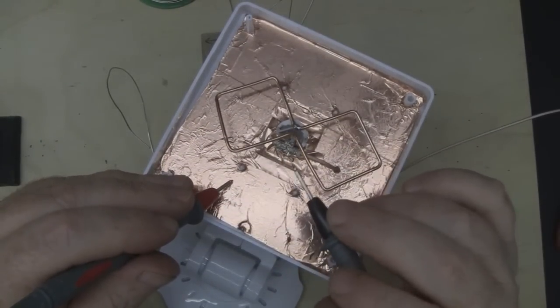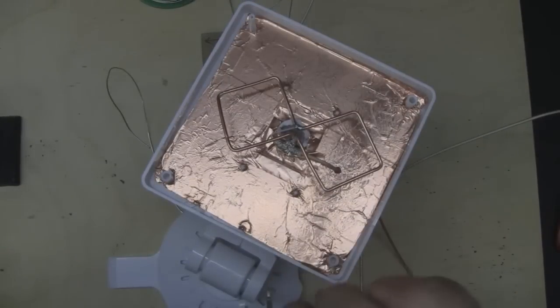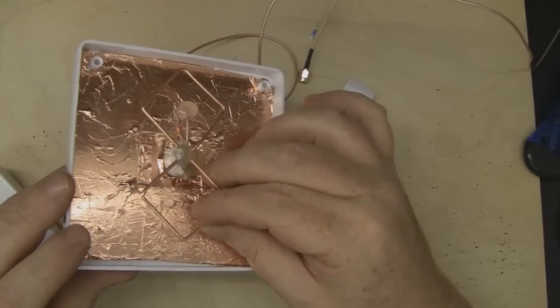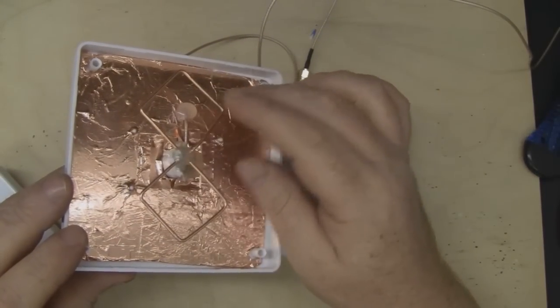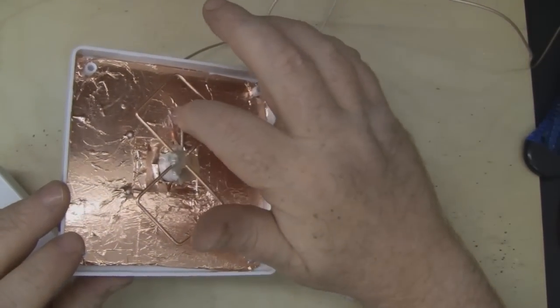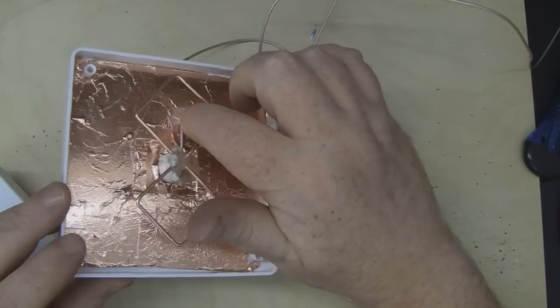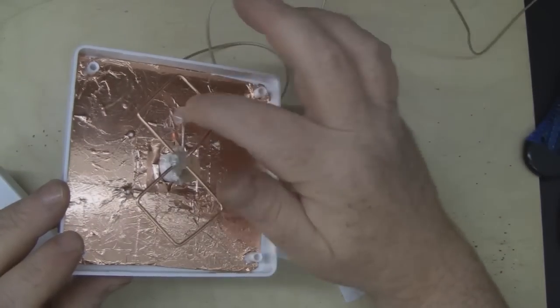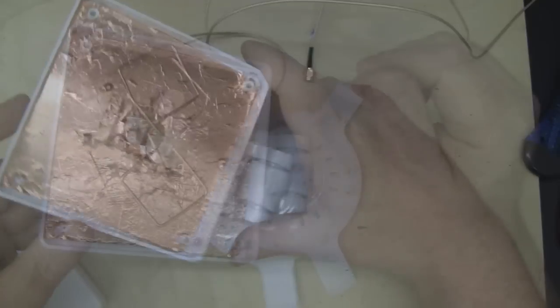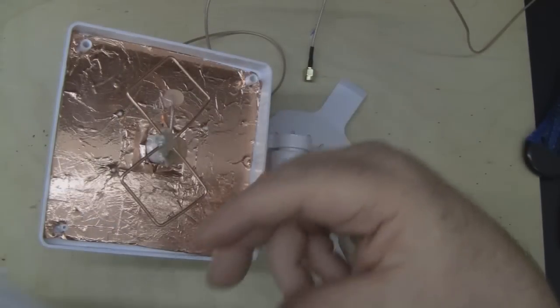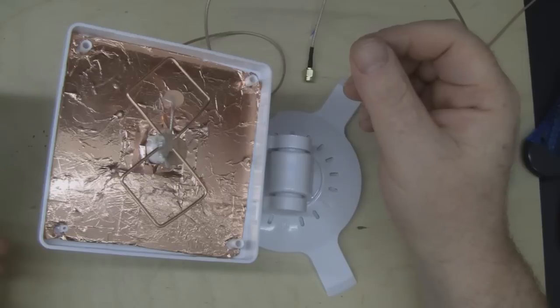Now that back reflector is now connected to the driven element of the bi-quad, so it should perform a lot better. Now that hot glue's dry, it's extremely stable. I've also added a little bit of hot glue here to the coaxial cable just for a little bit of strain relief. All that's left to do now is to put the lid back on and give it a test.